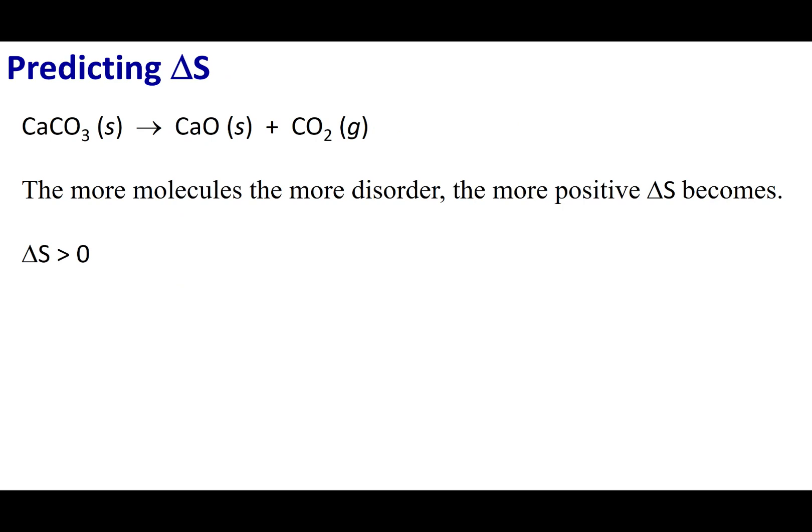So a couple of things when you make predictions concerning reactions. When you go ahead and make more stuff, that is going to be more disorder. So in this case, since I'm going from one thing to two things, the delta S is greater than zero because there's more disorder on my product side.